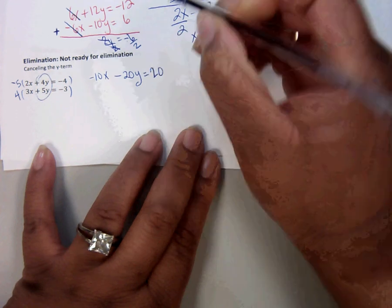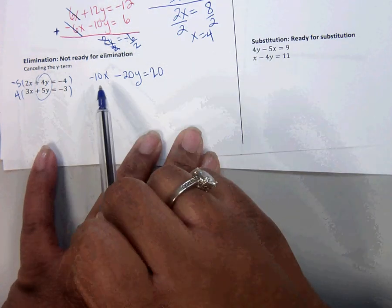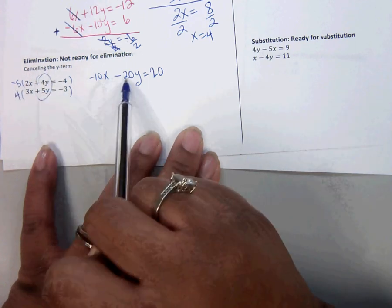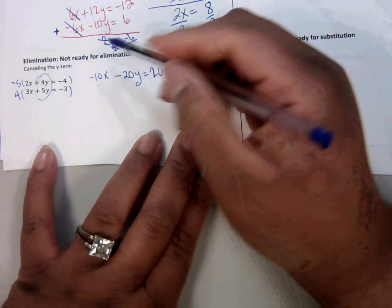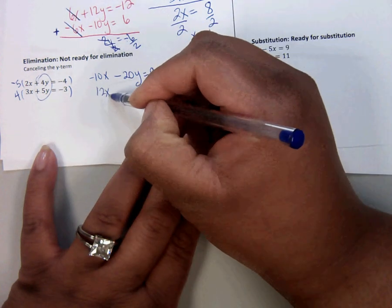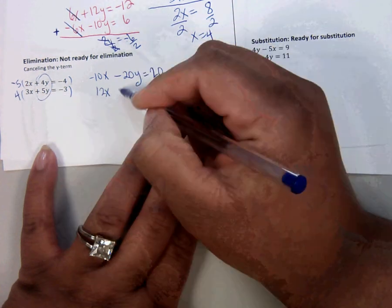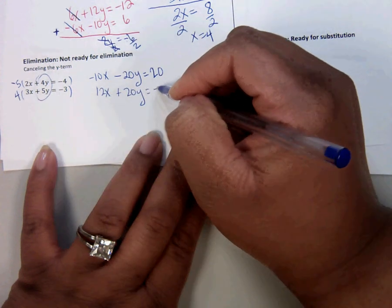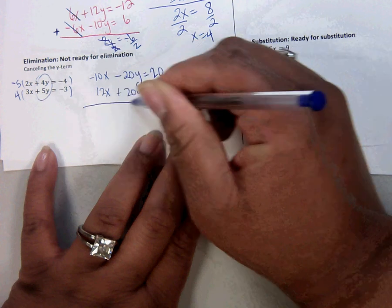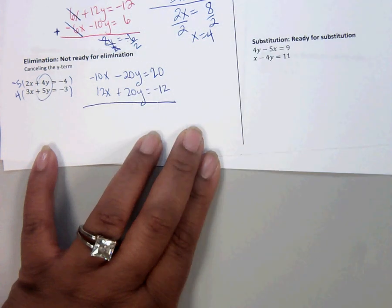That becomes negative 10x minus 20y equals positive 20. Let's check our work. This times this is negative 10x. This times this is minus 20y. This times this is positive 20. And this times this is 12. This times this is 20y. This times this is minus 12.